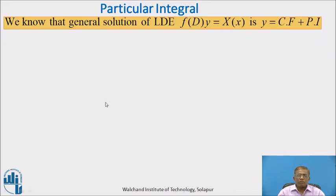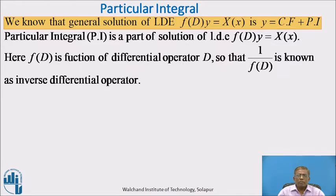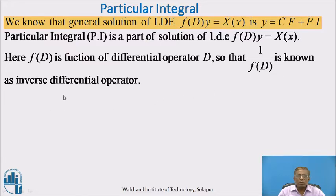Now let us start with the particular integral. The general solution of the linear differential equation f(D)·y = X(x) is y = CF + PI. CF means complementary function, which we discussed in the previous session. Today we will see how to find a particular integral for some standard functions. Particular integral is a part of the solution of f(D)·y = X(x). Here f(D) is a function of differential operator D, so 1/f(D) is known as the inverse differential operator.